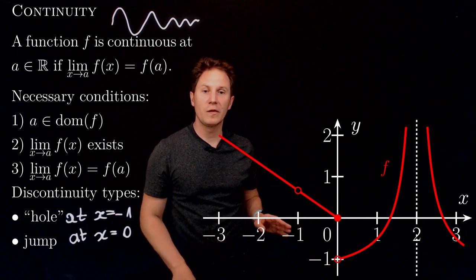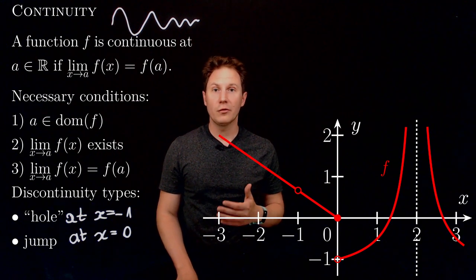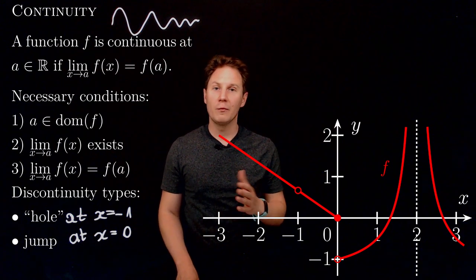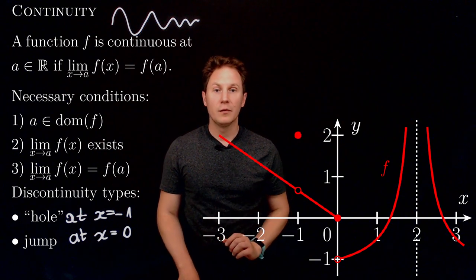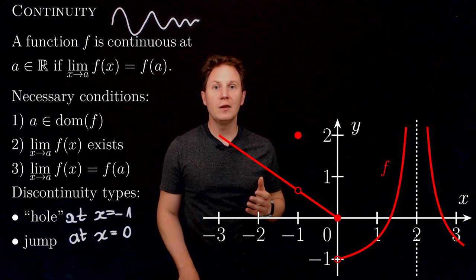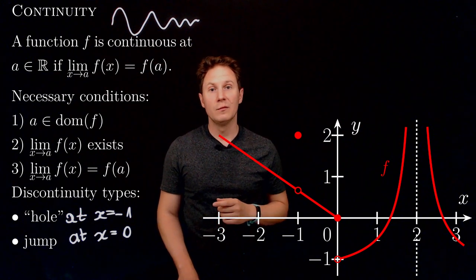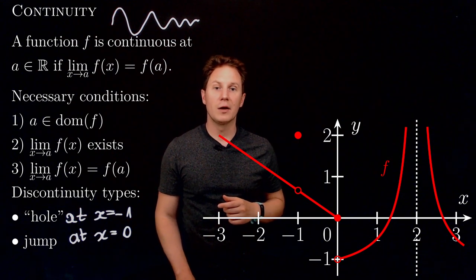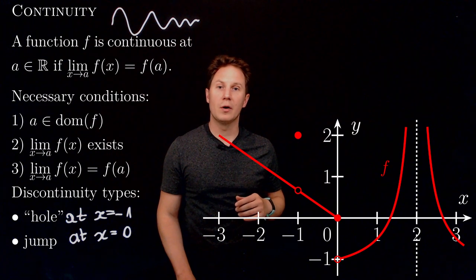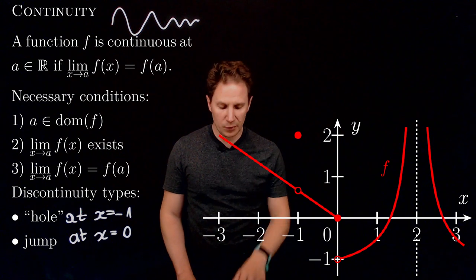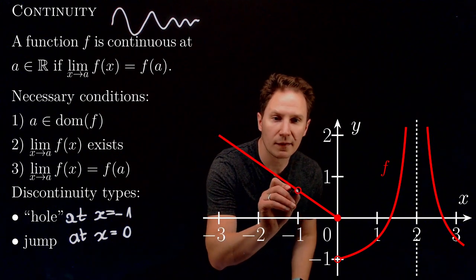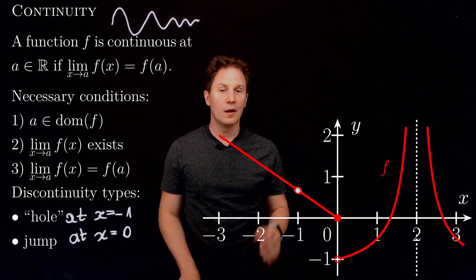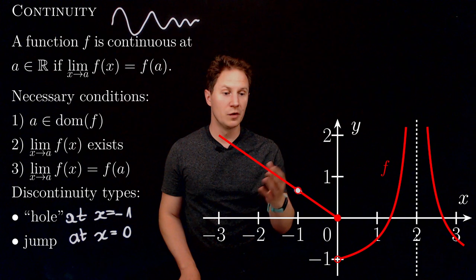Returning to x equals negative one, you might say we can fix this by just defining the function there — assigning a value to f of negative one. But we can do this in many ways; for example, defining f of negative one to be two along the y-axis doesn't solve the problem. We fixed condition one, and the limit still exists, but condition three is not valid because the limit as x approaches negative one is not the same number as f of negative one. You should fill in that hole discontinuity correctly, and indeed this is the reason why hole discontinuities are sometimes called removable discontinuities.